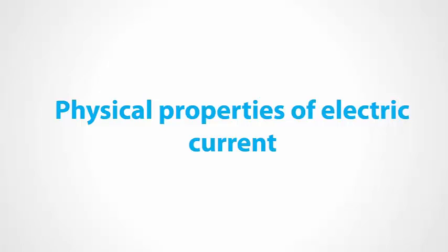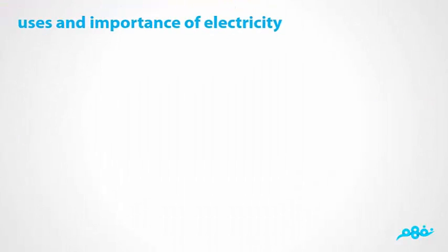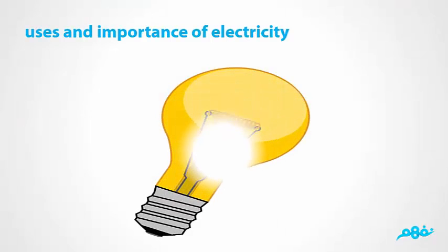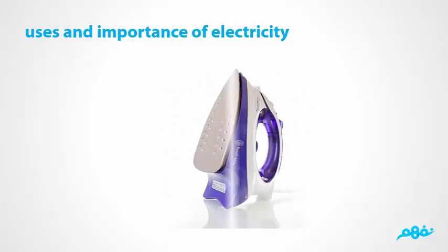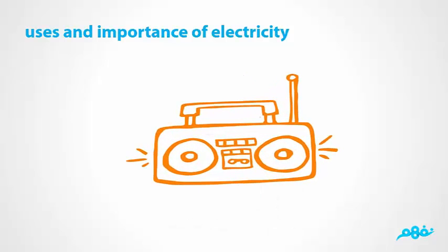Physical properties of the electric current. Uses and importance of electricity: 1. Lightning, where electricity changes to heat energy. 2. Heating, heaters and irons, where electricity changes to heat energy. 3. Radio and telephone, where electricity changes to sound energy.